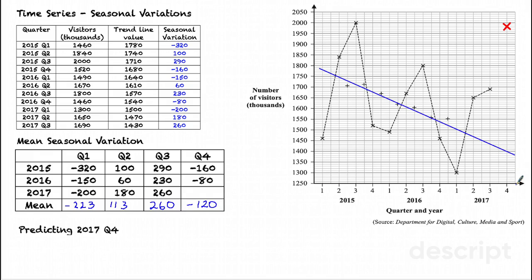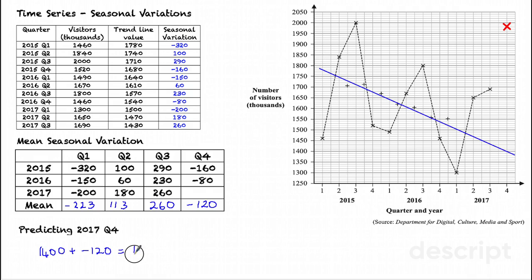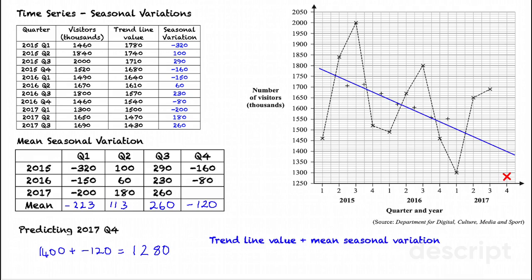I can use these mean seasonal variations to predict values. I'm going to predict a value for 2017 quarter 4. I do that by first reading the trend line value for that quarter — here it's 1,400. I then add on the quarter 4 mean seasonal variation of minus 120, which means I'm actually doing a subtraction: 1,400 subtract 120, giving me 1,280. I can plot that value on our graph as my predicted value. To recap: the trend line value plus the mean seasonal variation gives us our predicted value.